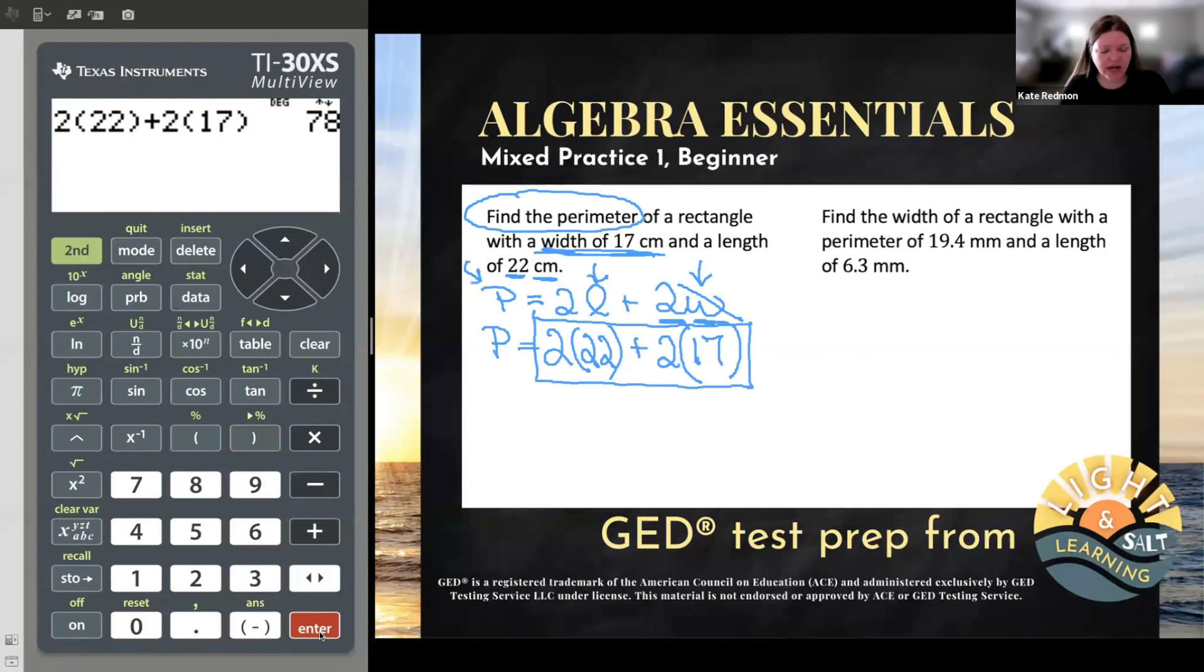So we see that entire expression is 78. On my other side, all I had was P is equal to. So now I know that P is equal to 78. The perimeter of the shape is 78. And 78 what? Well, let's see. We were going around the outside in centimeters. So this is going to be 78 centimeters.